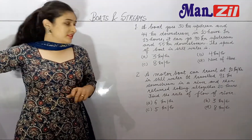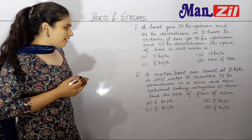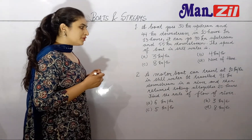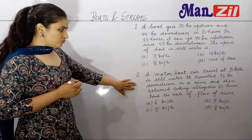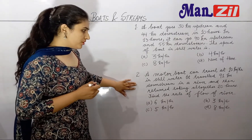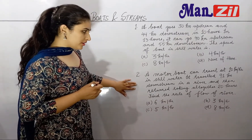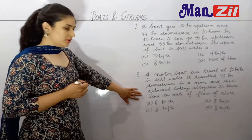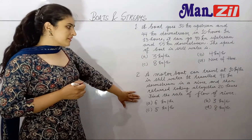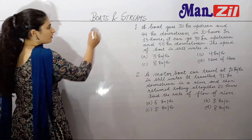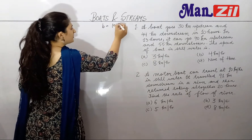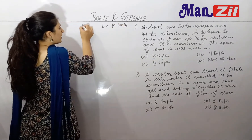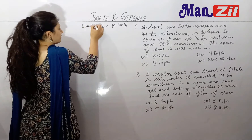Now we will do the second question. A motorboat can travel at 10 km per hour in still water. It travelled 91 km downstream in a river and then returned altogether taking 20 hours. Find the rate of flow of the river. The option is given. The speed of the boat is 10 km per hour.